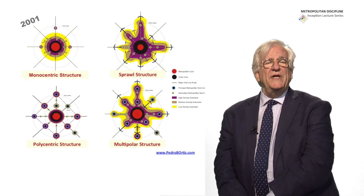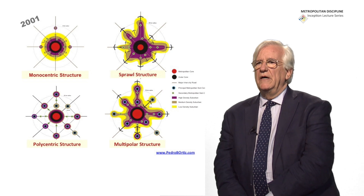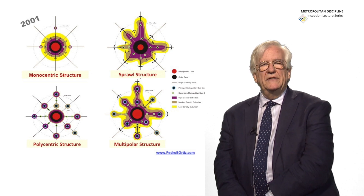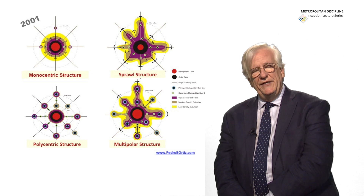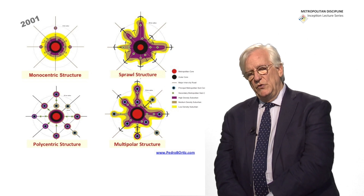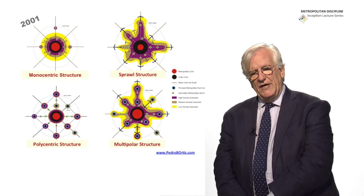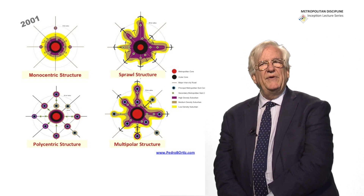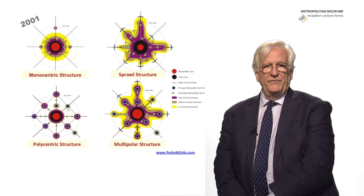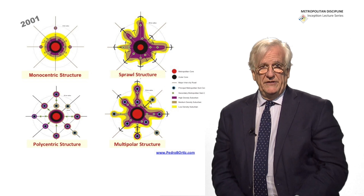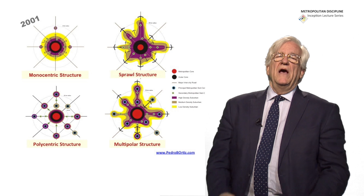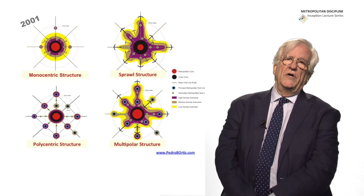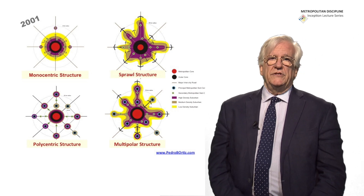In 2001, Edward Lemmon, a Canadian professional, did for the multilaterals — the World Bank, UN Habitat, IDB and so on — an analysis of the different typologies, structural typologies of metropolises, and he found that there were four main typologies.